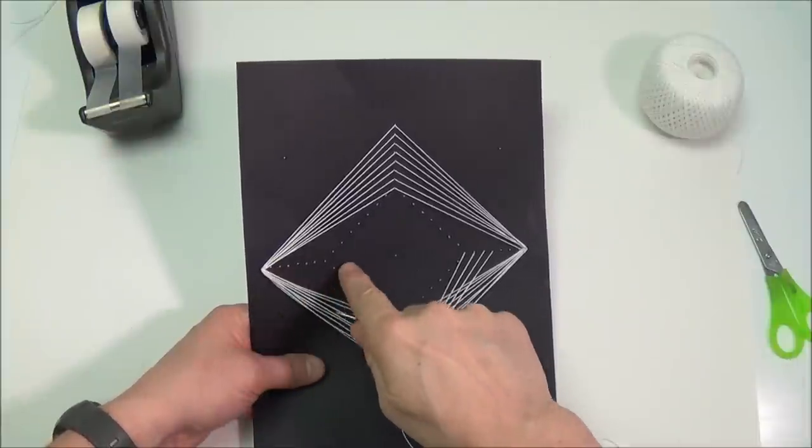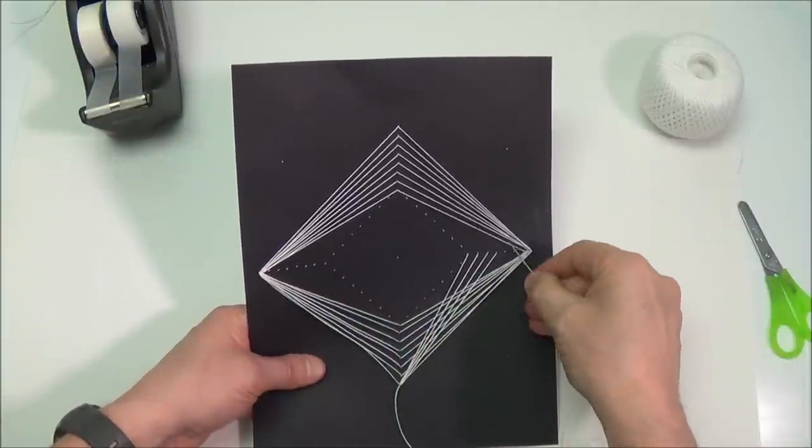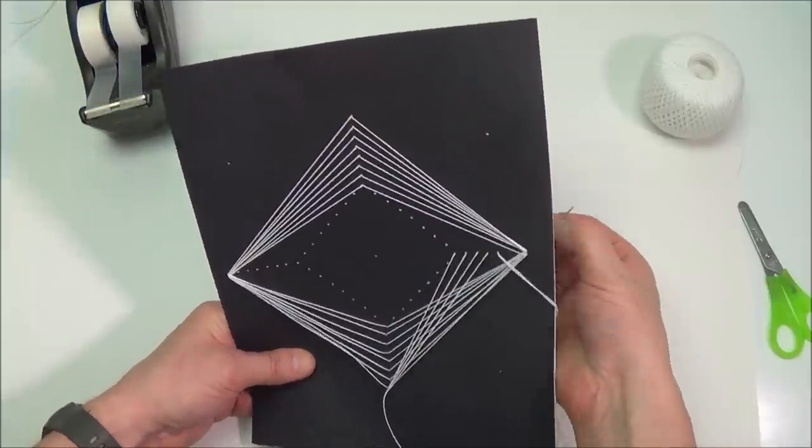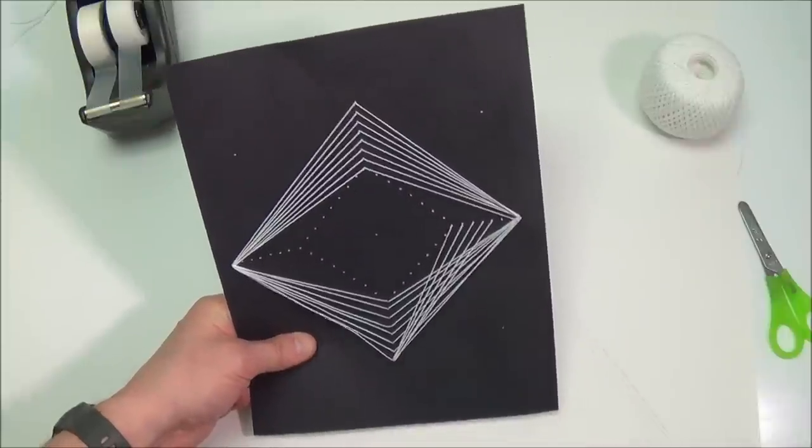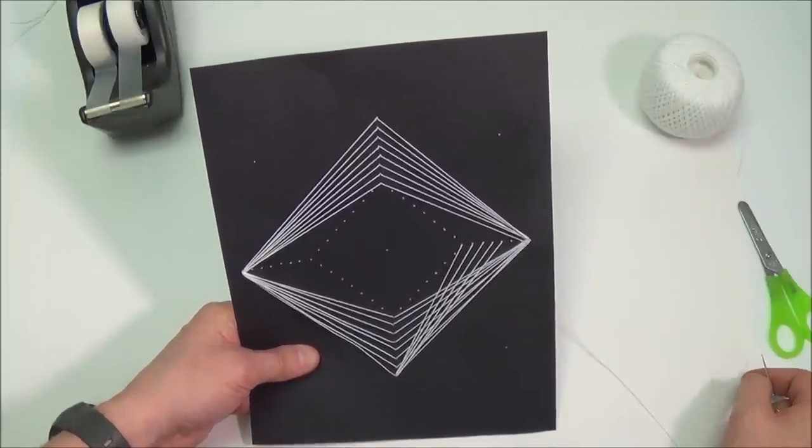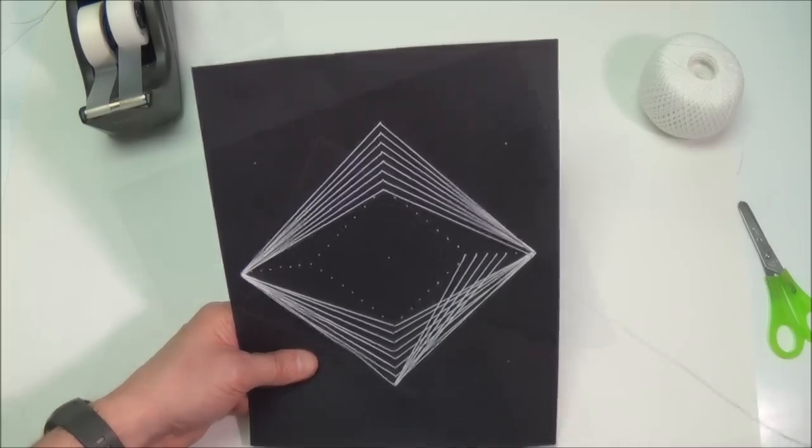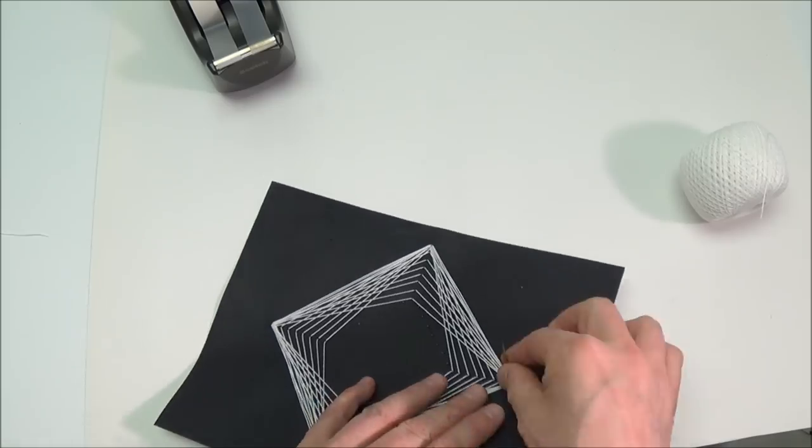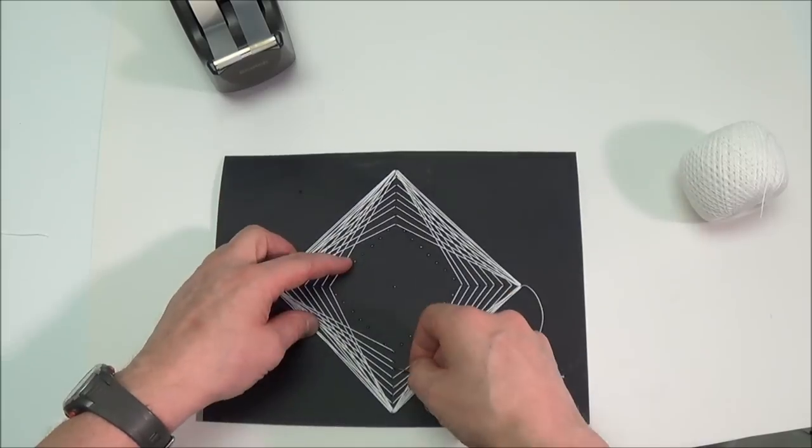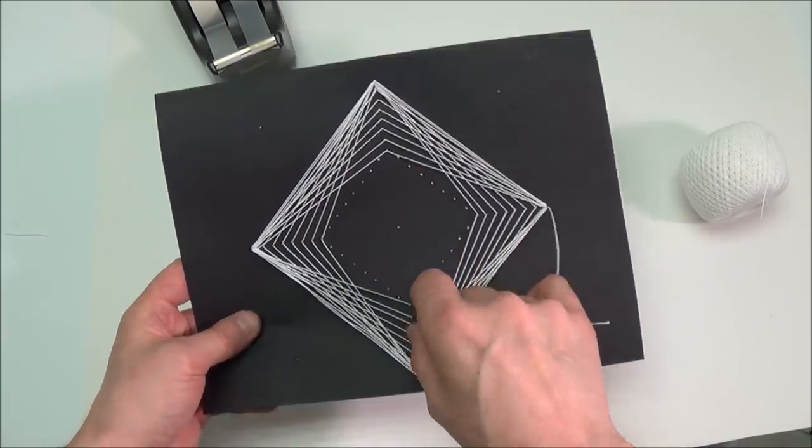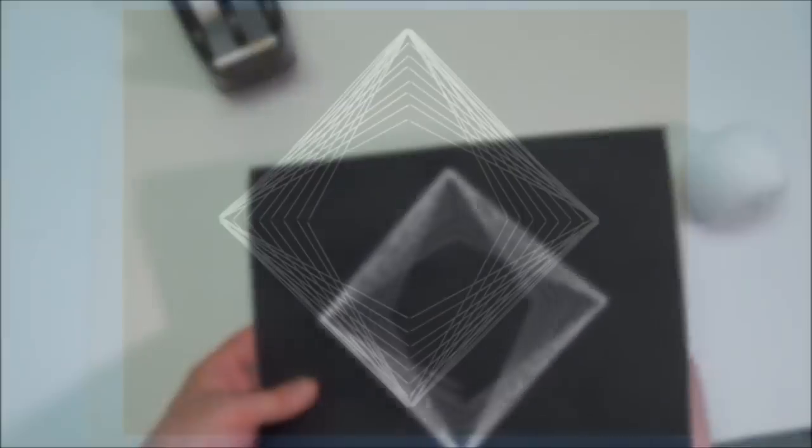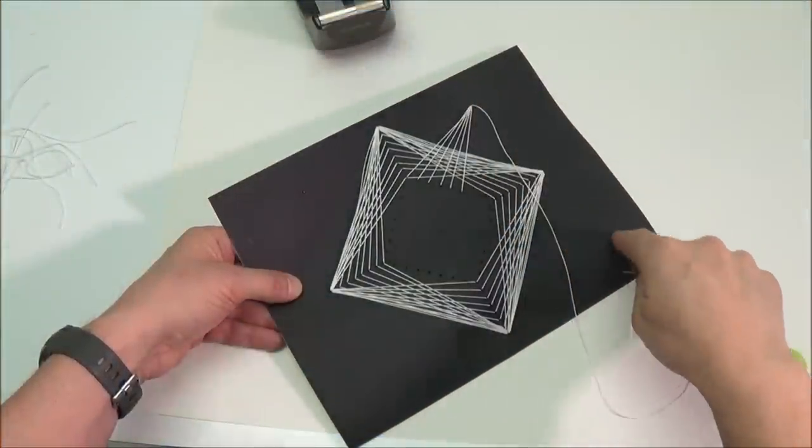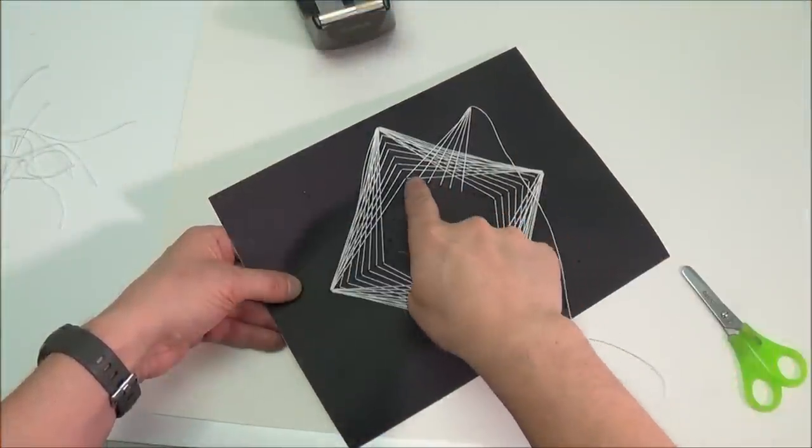For this layer, we're stringing to this line of holes. Notice the second layer is overlapping the first. String the four corners up to the middle lines.